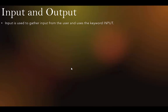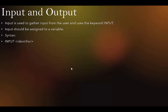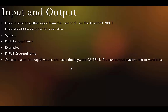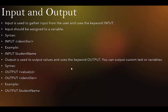Input and output: INPUT is used to gather input from the user and uses the keyword INPUT. Input should be assigned to a variable — you should never input a literal value like 5, because we need a variable to hold what the user enters. Syntax: INPUT followed by the identifier. Example: INPUT StudentName. OUTPUT is used to output values and uses the keyword OUTPUT. You can output variables or custom text. Example: OUTPUT StudentName, or OUTPUT 'Welcome to Cambridge Computer Science'.